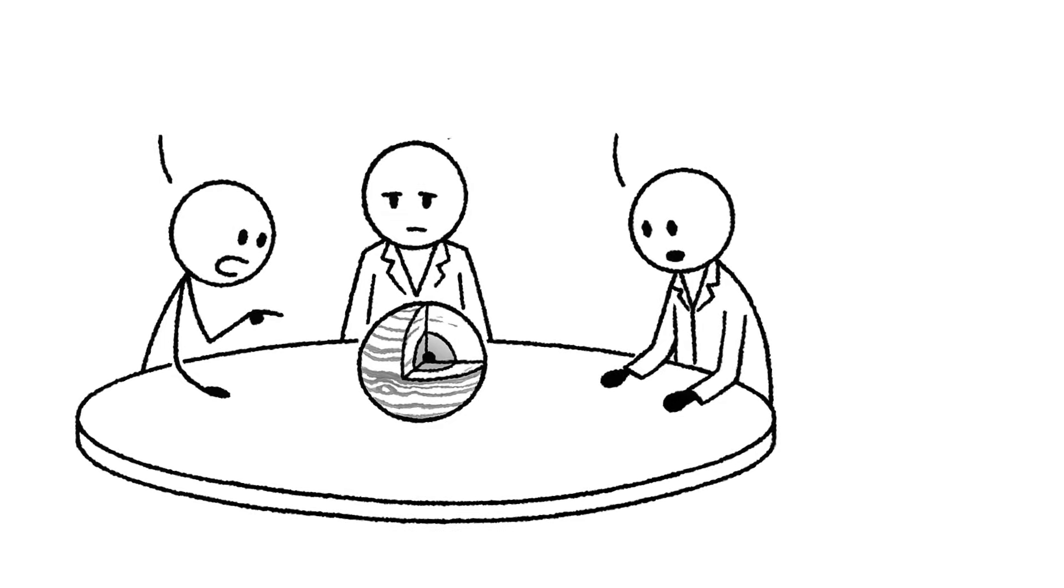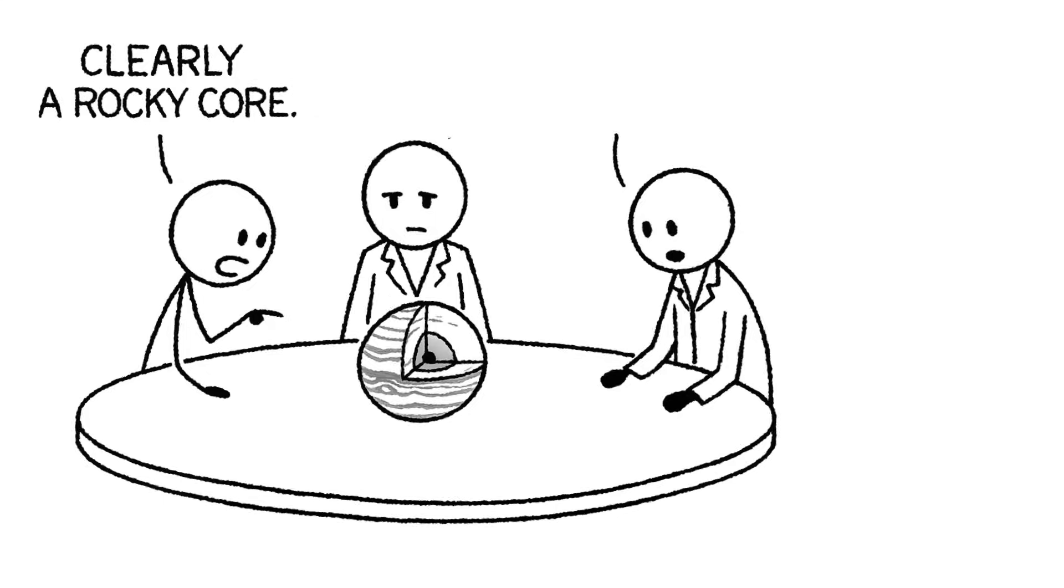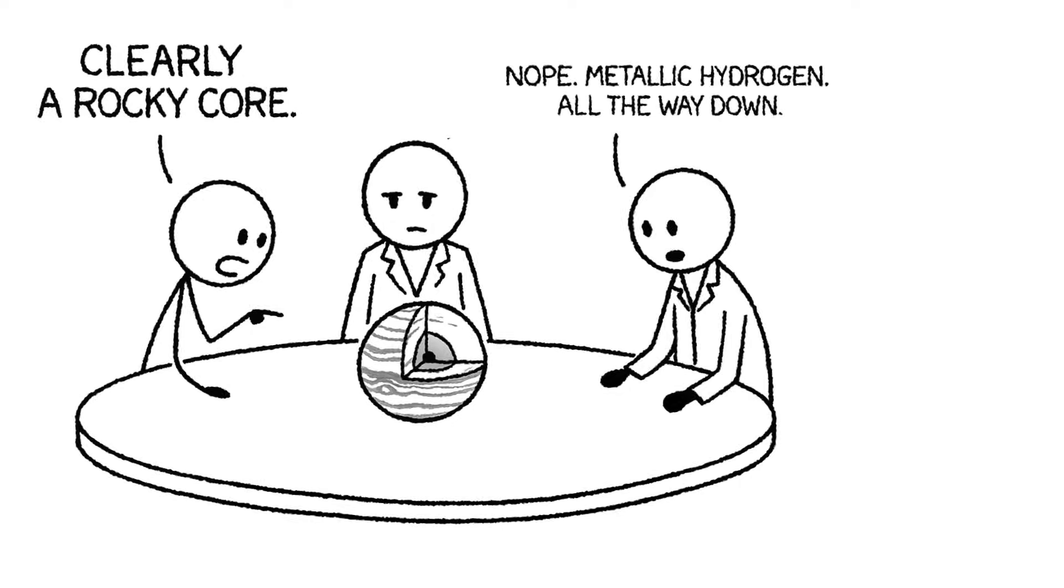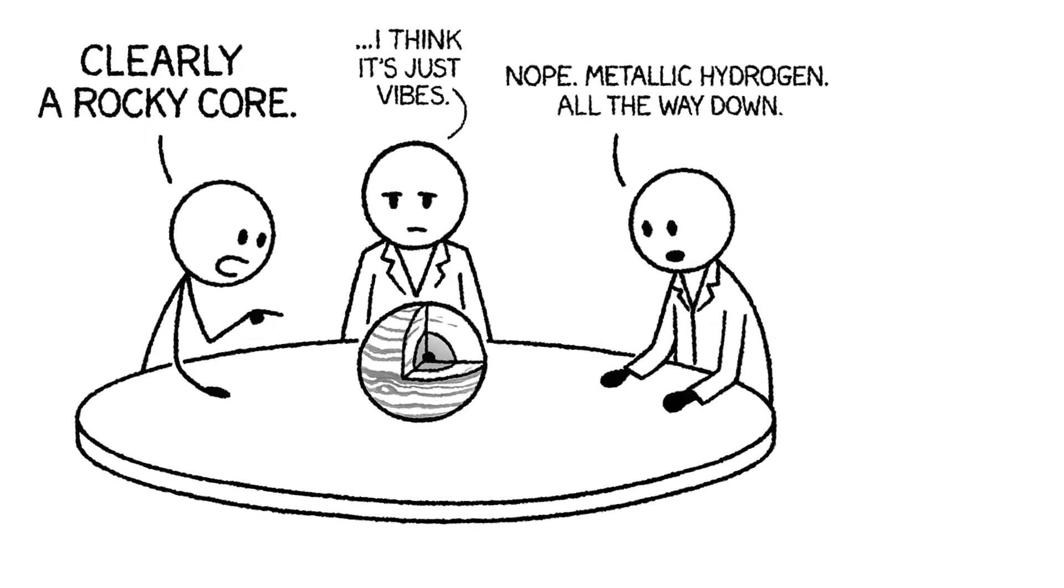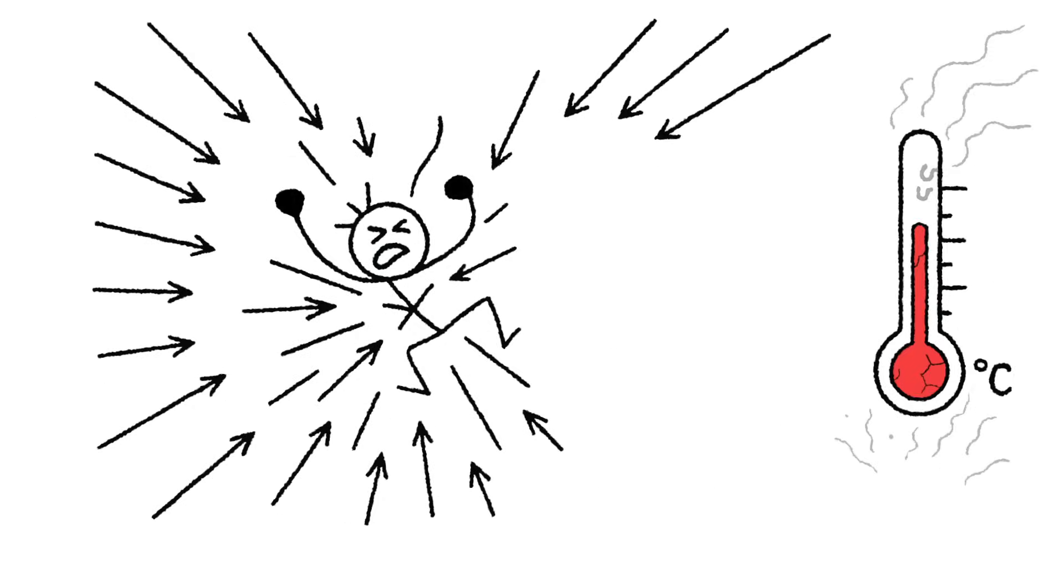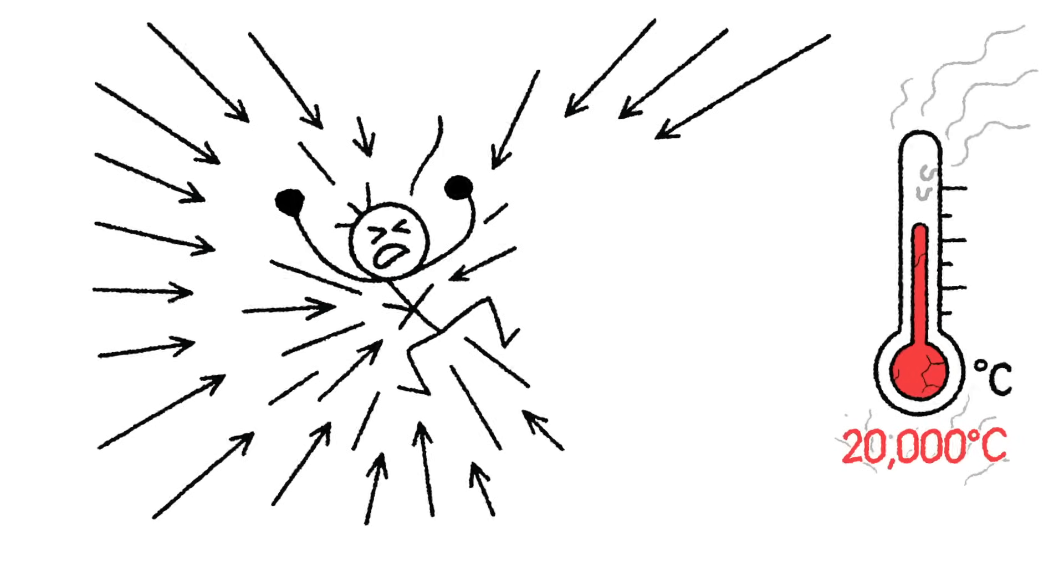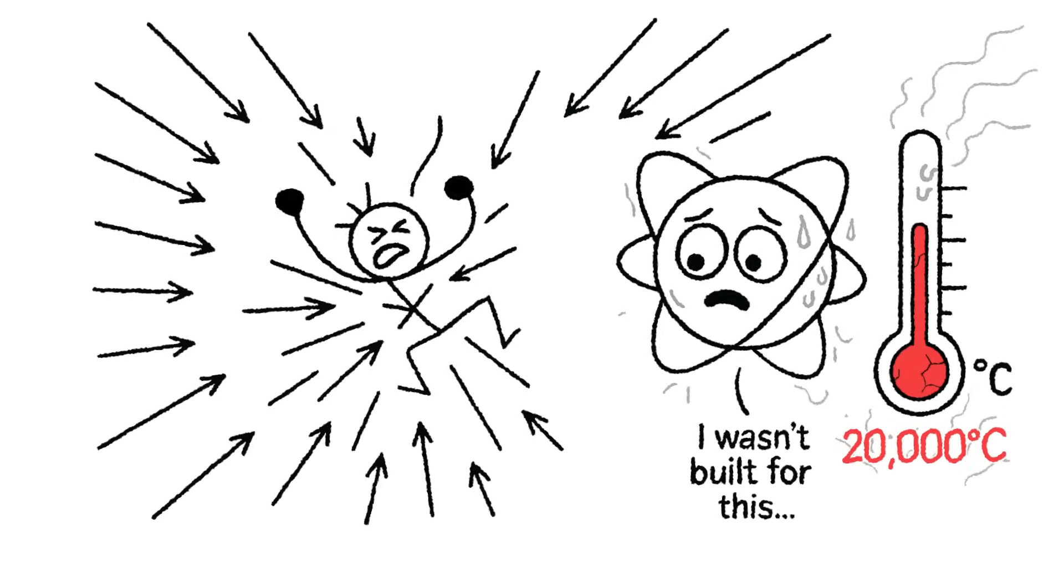Scientists aren't sure what's at Jupiter's core. Maybe a dense ball of rock and exotic ices forged under crushing pressure? Maybe just more superheated metallic hydrogen pretending to be a solid. No land, no floor. Just gradients of matter getting denser, stranger, and hotter the deeper you go. But Jeff's not going to find out. At this depth, pressures soar past 2 million times Earth's atmosphere. Temperatures spike to an estimated 20,000 degrees Celsius. Hotter than the surface of the sun. Even atoms are getting uncomfortable. Their electrons stripped away. Matter reduced to raw energy and chaos.